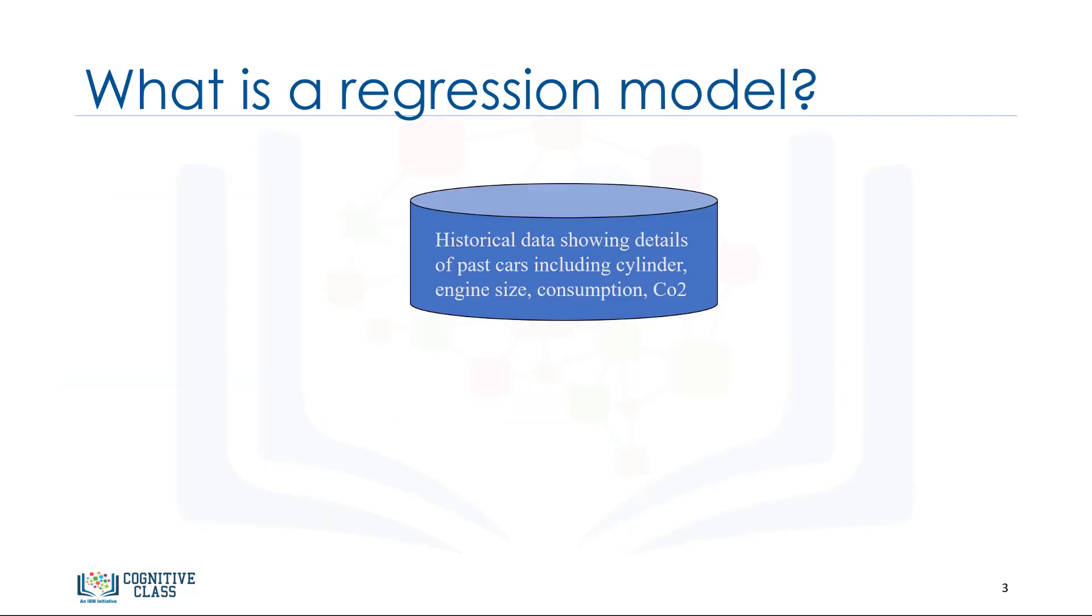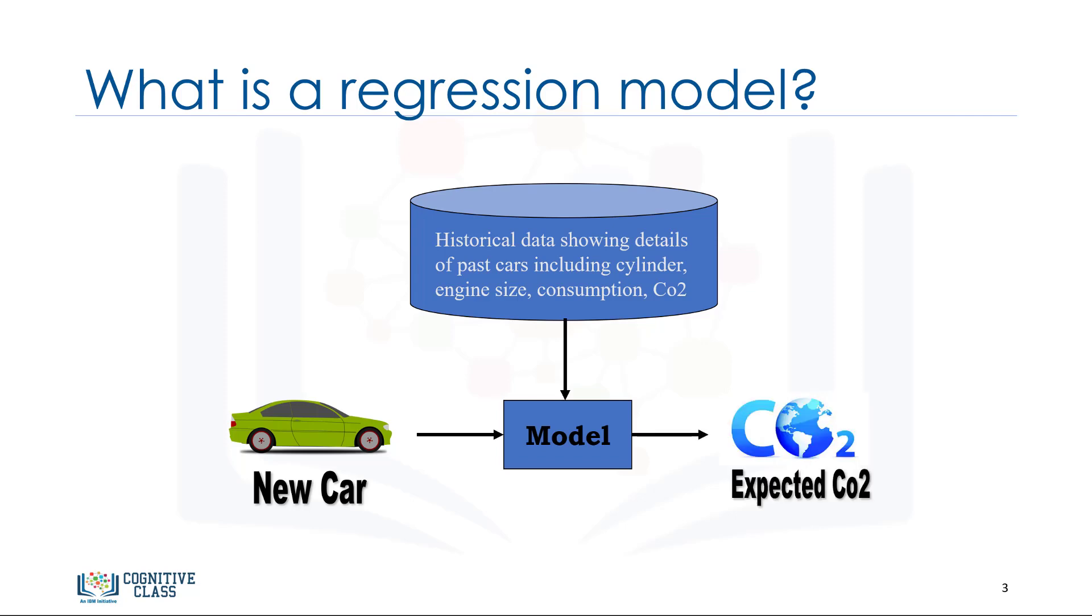So, what we want to do here is to use the historical data of some cars using one or more of their features and, from that data, make a model. We use regression to build such a regression estimation model. Then the model is used to predict the expected CO2 emission for a new or unknown car.